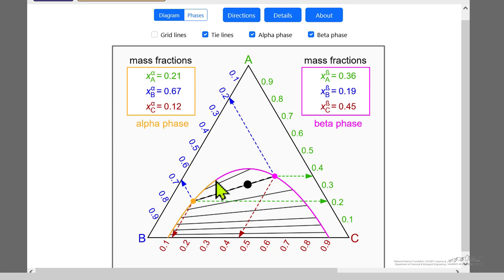We have a point where we switch from purple to orange. This is the plait point. This corresponds to the transition. We draw these tie lines where we're connecting the alpha and the beta phase. This is where the phases become the same composition.